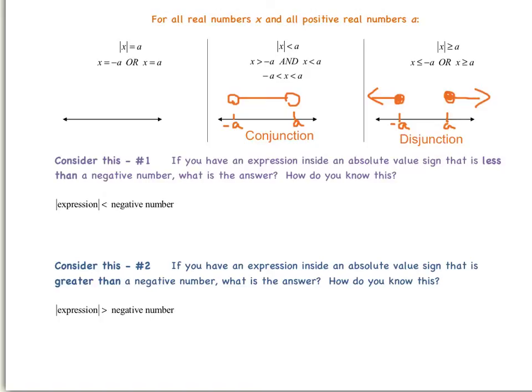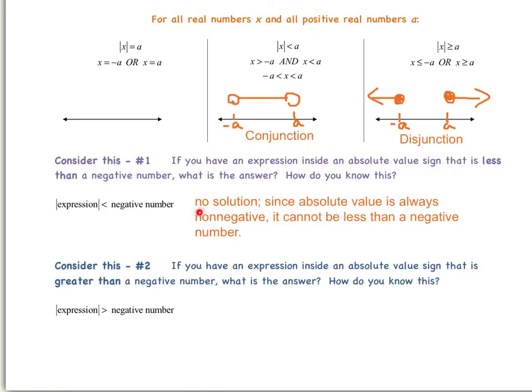Now let's look at a couple of special cases. Consider number one: if you have an expression inside an absolute value sign that is less than a negative number, what is the answer? The answer would be no solution. This is because absolute value is always a non-negative number — meaning it's always positive or zero — and because of that, it cannot be less than a negative number.